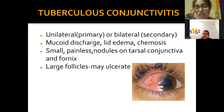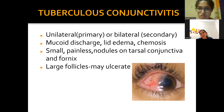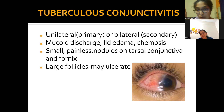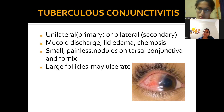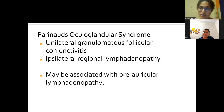On the tarsal conjunctiva — the inner surface seen when the eyelid is everted — you may see small painless nodules. In the fornices, at the junction between the palpebral and bulbar conjunctiva, small painless nodules can appear in 50 to 70 percent of cases, sometimes with large follicles due to lymphoid reactions. It's important to keep tuberculous conjunctivitis as a differential diagnosis.